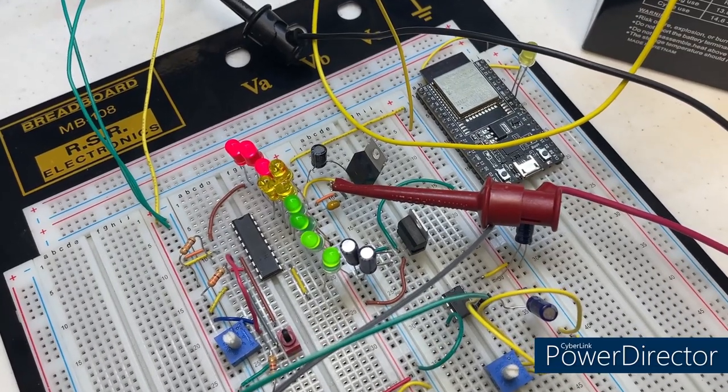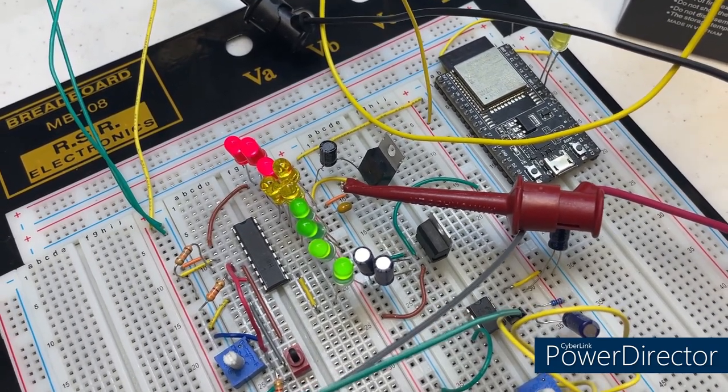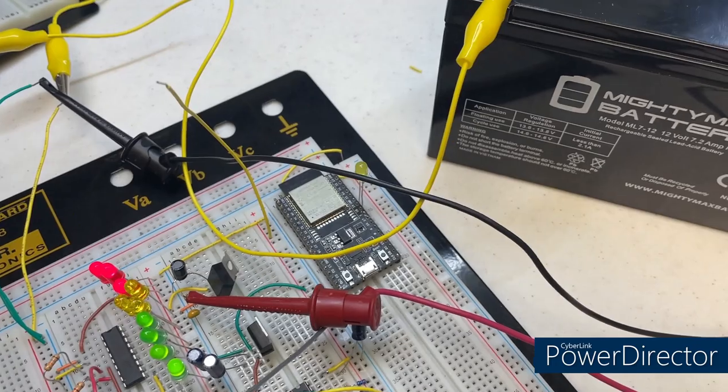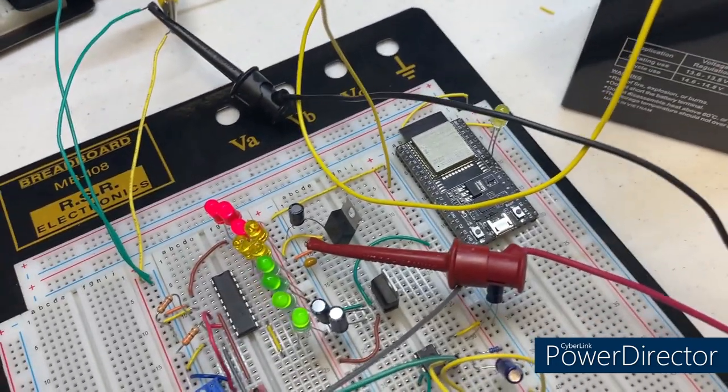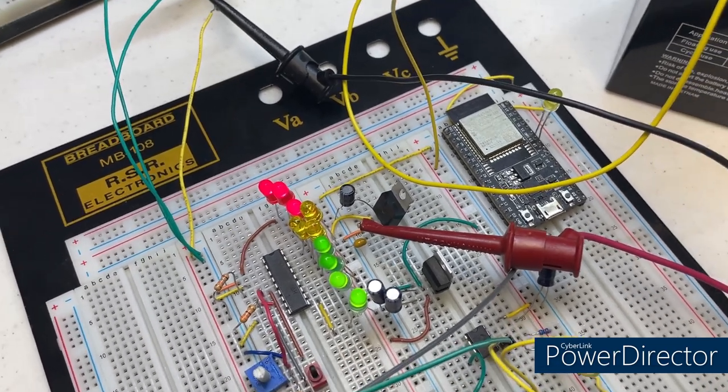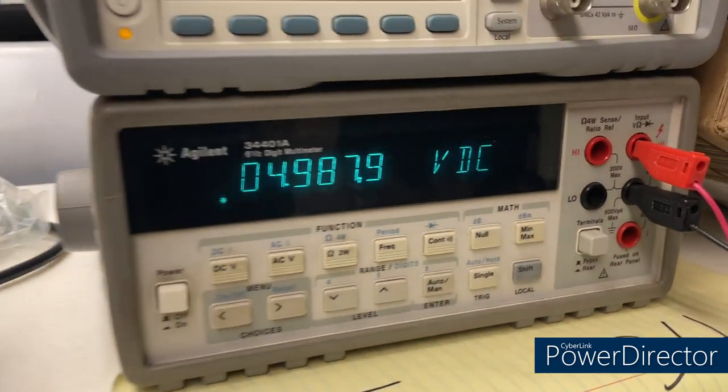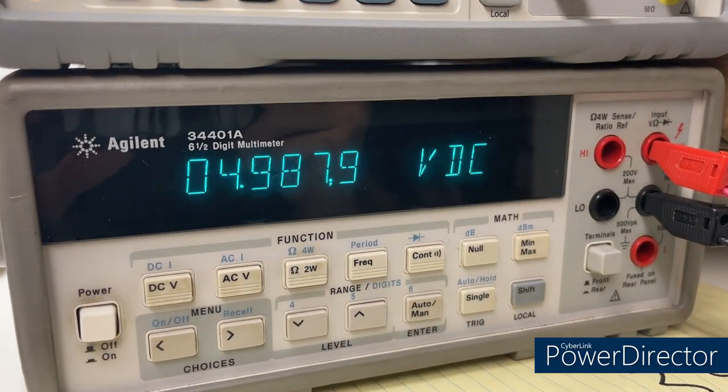We have two voltage regulators, one for the microcontroller and one for the relay module. Since we're using a 12-volt battery, I first connected it with a voltage regulator which converts 12 volts to 5 volts. It's now connected, and the result shows the voltage is exactly 5 volts.